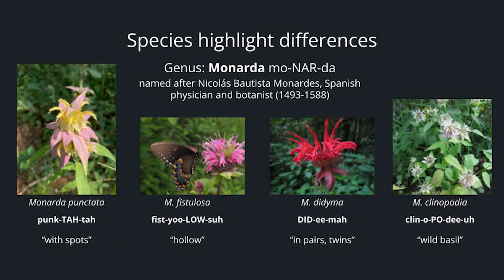Some species names highlight differences between related plants. Looking at Monarda — named after Nicolás Bautista Monardes, a Spanish physician and botanist — a Monarda with spots on the petals would be Monarda punctata. Most mints have hollow stems, but Monarda fistulosa designates that the plant has a hollow stem. Monarda didyma means in pairs or twins, referring to the flower petals. And Monarda clinopodia is wild basil.